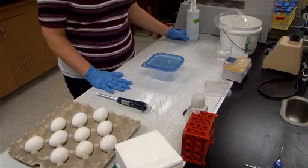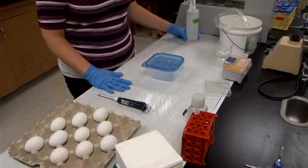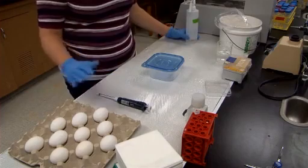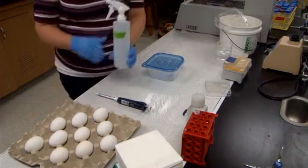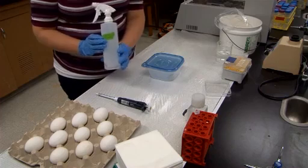The eggs have been incubated at 37 degrees Celsius with 40% humidity for approximately three and a half days, which roughly correlates to Hamburger and Hamilton stage 19.